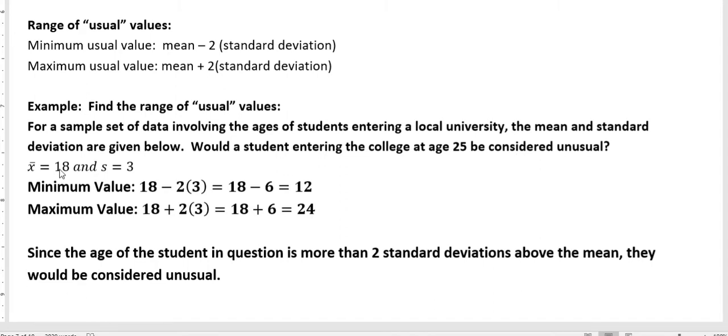Well, if our mean is 18 and our standard deviation is 3, to find the minimum value we take 18 minus two times the standard deviation. Because remember, we could go left or right with that standard deviation. Two times three is six, and 18 minus six would be 12.